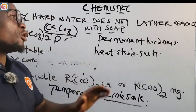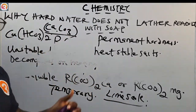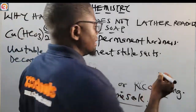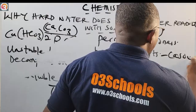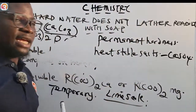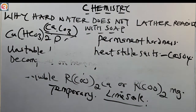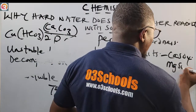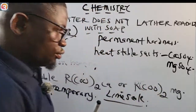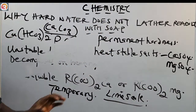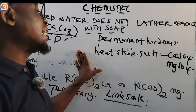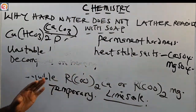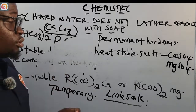Permanent hardness is due to the presence of heat-stable salts such as calcium sulphate (CaSO₄) or magnesium sulphate (MgSO₄). No matter how much you heat these salts, they remain in the solution, so the water stays permanently hard.